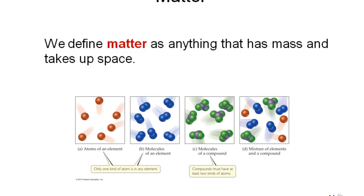Matter should have mass and it should occupy space. Those are the two conditions for something to be matter. Here is a picture of different forms of matter. The first two boxes contain only one kind of atom. Each of those colored spheres you see, we can call them atoms.